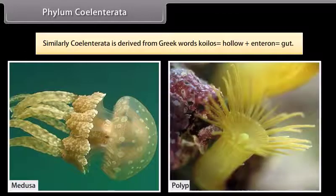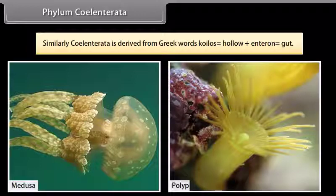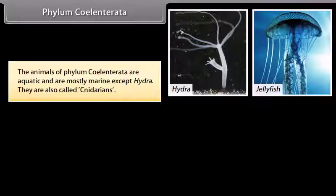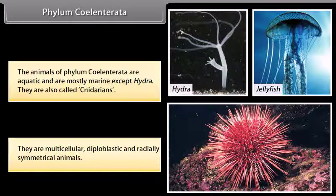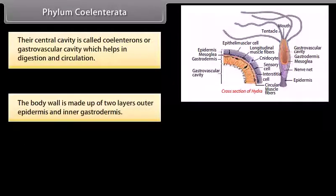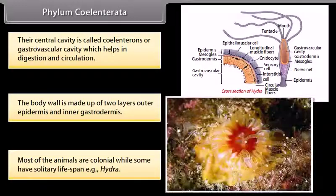Phylum Coelentrata. Coelentrata is derived from Greek words: coilos, hollow, plus enteron, gut. The animals of phylum Coelentrata are aquatic and mostly marine, except Hydra. They are also called cnidarians. They are multicellular, diploblastic, and radially symmetrical animals. Their central cavity is called coelenteron or gastrovascular cavity, which helps in digestion and circulation. The body wall is made up of two layers: outer epidermis and inner gastrodermis. Most of the animals are colonial, while some have a solitary lifespan, that is Hydra.